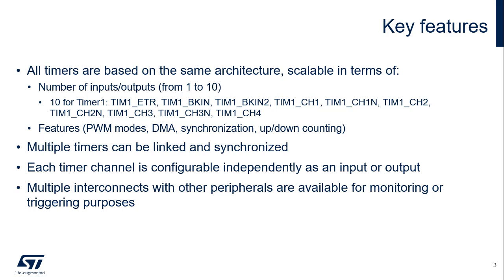Here are the key features of the STM32 timers. All timers are based on the same architecture and are available in several derivatives. The timers mainly differ in the number of inputs and outputs they have, from a minimal timer with two IOs, such as TIM14, to an advanced control version with 10 IOs, such as TIM1 and TIM3. Some features may not be present on the smallest timer derivatives, for example DMA, synchronization, and up-down counting modes.